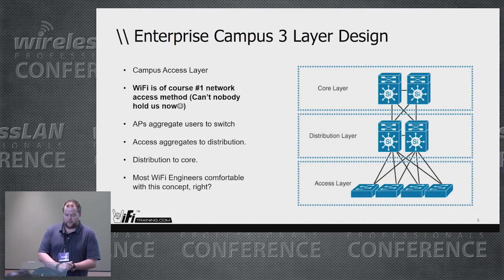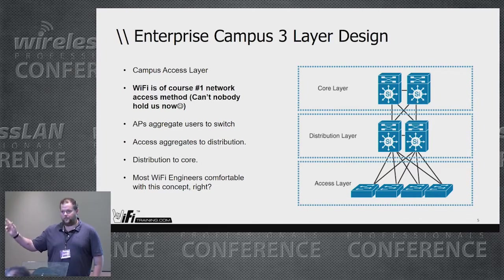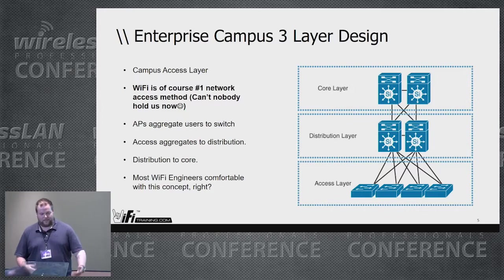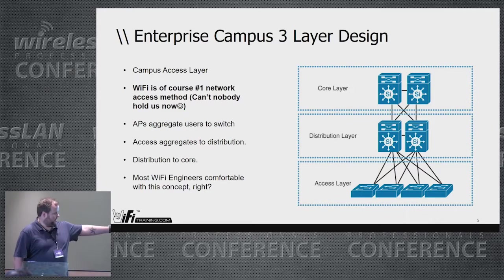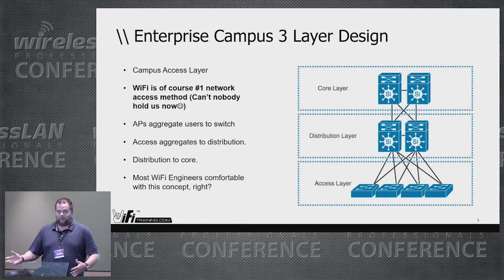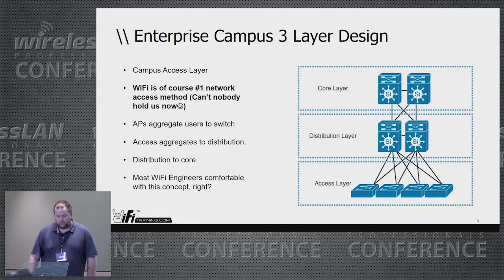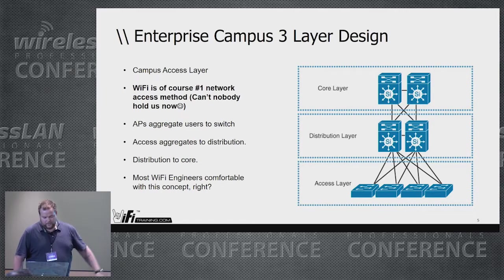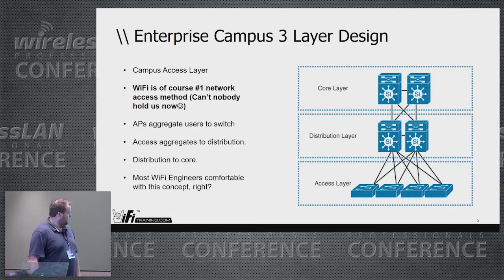Cisco has this thing called the Enterprise Campus three-layer design model. How many of you are familiar with this? Core, distribution, access — that's where most of us wireless engineers live, down at the access layer. But it's a good idea to understand the other layers as well, because they all impact the data path and the end-user experience, which is what we're designing for. APs aggregate to the switch, access aggregates to distribution, distribution to core.